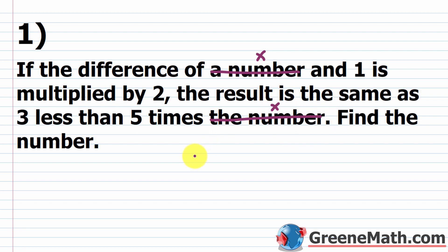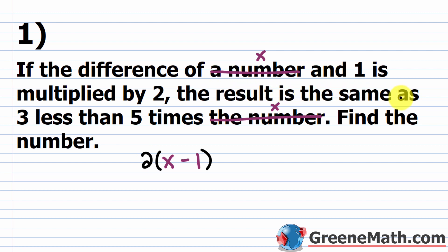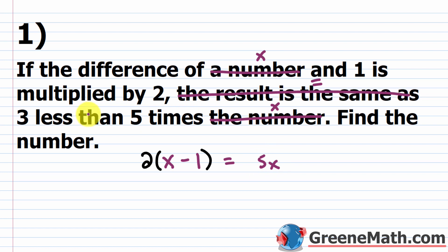Read back through now that you have x there. The difference of x and one is x minus one, then it says is multiplied by two. You need to be careful — multiply this entire quantity by two, so wrap it in parentheses and put a two out in front. Whenever you see 'the result is the same as,' that's basically equals. So we have five x and then three less than that, so minus three. That's all it takes to set up the equation.